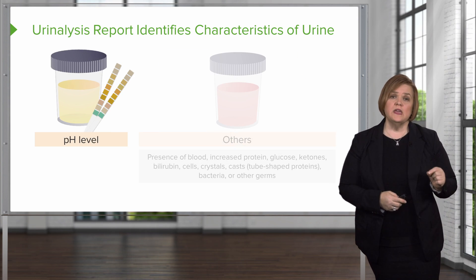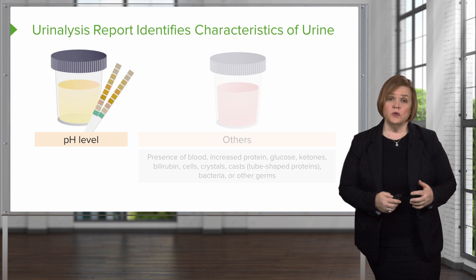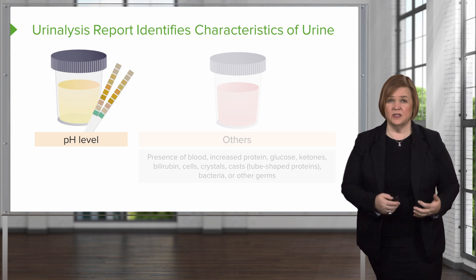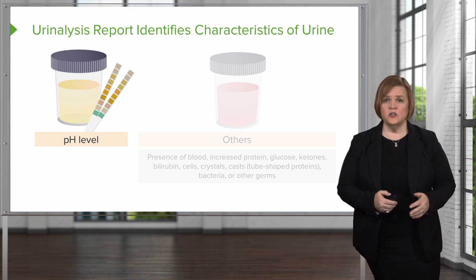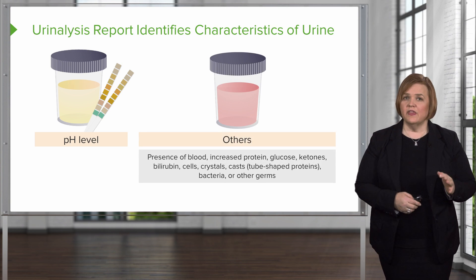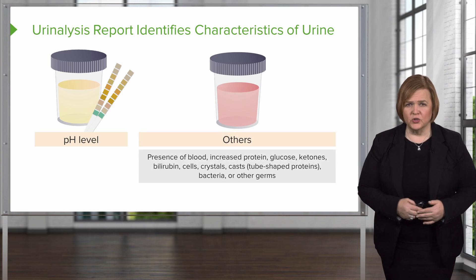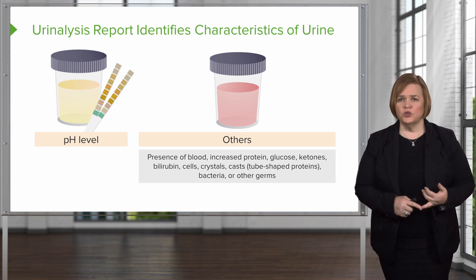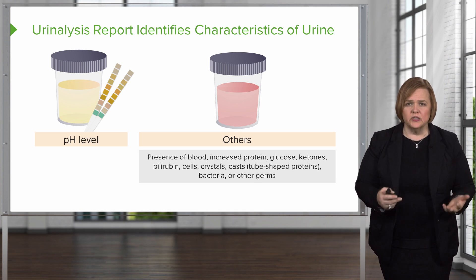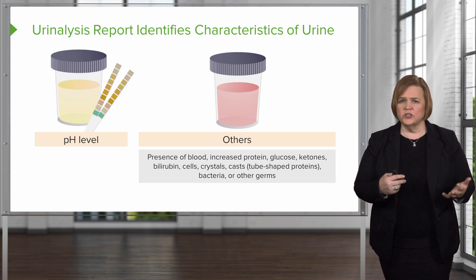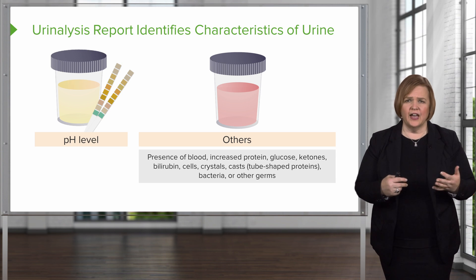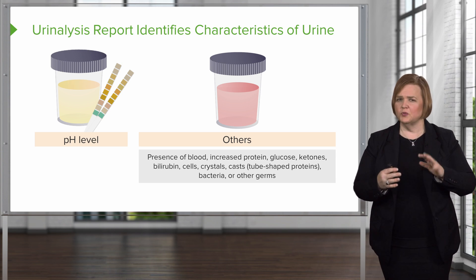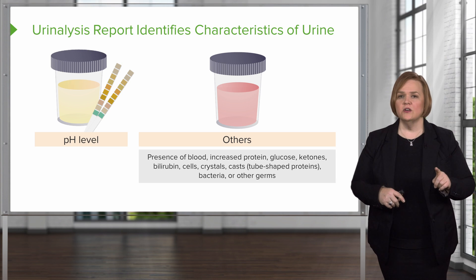Next, we can look at the pH level. Remember, the kidneys are very involved in acid-base balance, so knowing the pH of the urine will also help us. Beyond that, the urinalysis can also tell us about the presence of blood, extra protein, glucose, ketones, bilirubin, cells, crystals, casts — which are these weird protein shapes we'll talk about later — and bacteria or other germs.